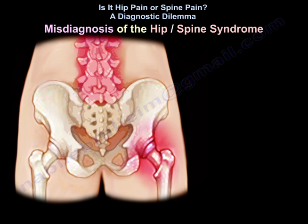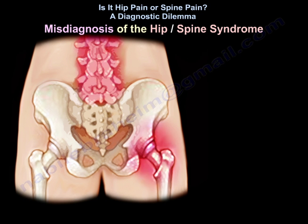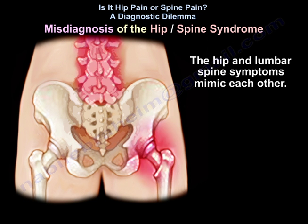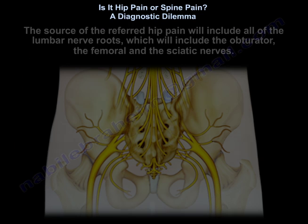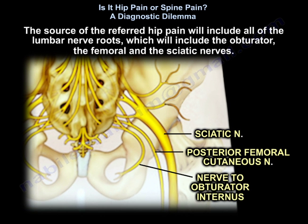Another entity is misdiagnosis of hip-spine syndrome, where the primary source of pain is incorrectly diagnosed, resulting in inappropriate and expensive studies and treatment. Hip and lumbar spine symptoms mimic each other. The sources of referred hip pain include all the lumbar nerve roots, including the obturator, femoral, and sciatic nerves.